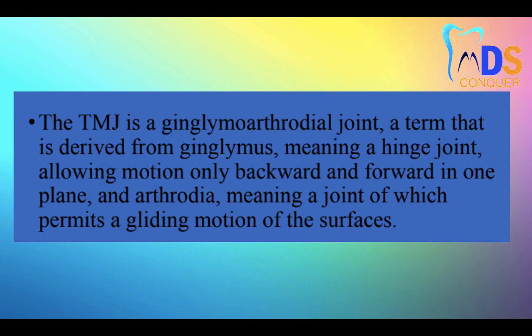TMJ is a ginglymoarthroidal joint — a term derived from 'ginglimus,' meaning a hinge joint allowing motion in backward and forward direction in one plane, and 'arthroida,' meaning a joint that permits gliding motion of the surface. This gliding motion occurs in the superior compartment of the joint, and the hinge movement occurs in the inferior compartment.